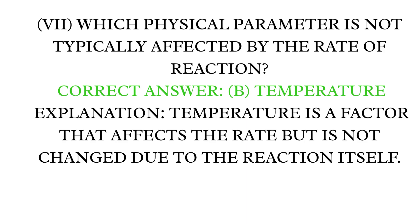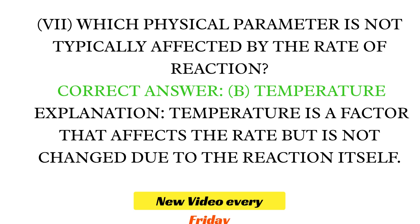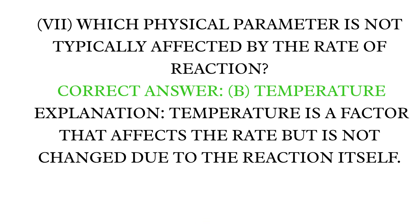MCQ 7: Which physical parameter is not typically affected by the rate of reaction? Correct answer: B — Temperature. Explanation: Temperature is a factor that affects the rate but is not changed due to the reaction itself.